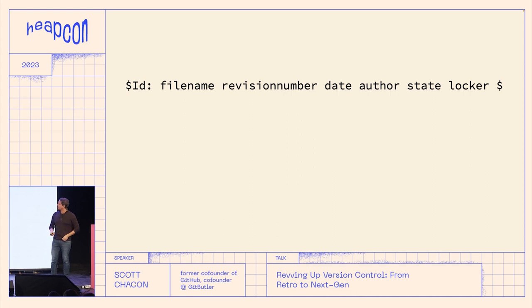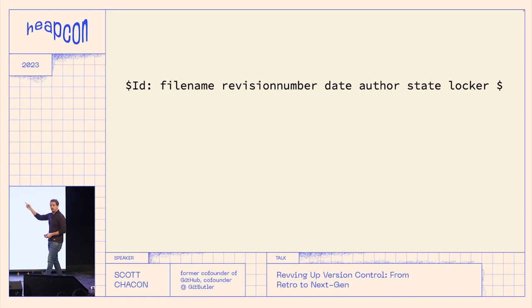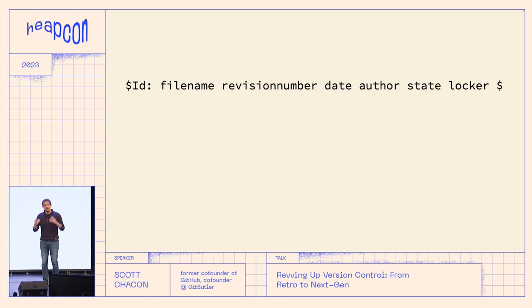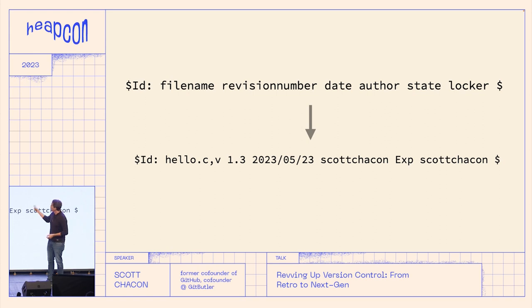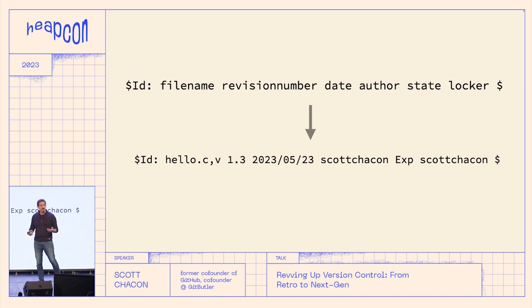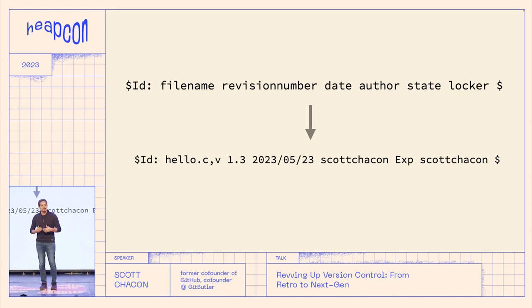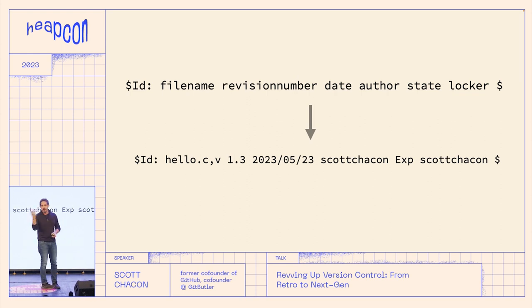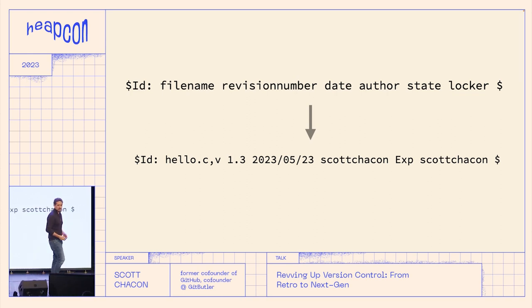One cool thing RCS would do is keyword substitution. If you put a special tag in your source file, when you checked the file out it would replace it with metadata like version, author, and date. When you checked it back in, it would revert to the tag. You can actually do this in Git — it has smudge and clean filters where you can process a file on checkout and another process on check-in. But this was built right into RCS.